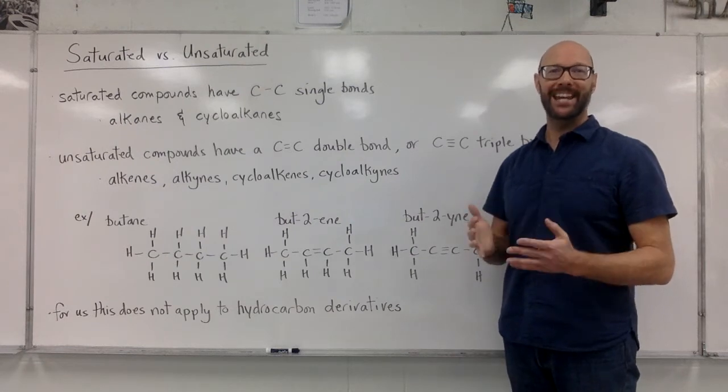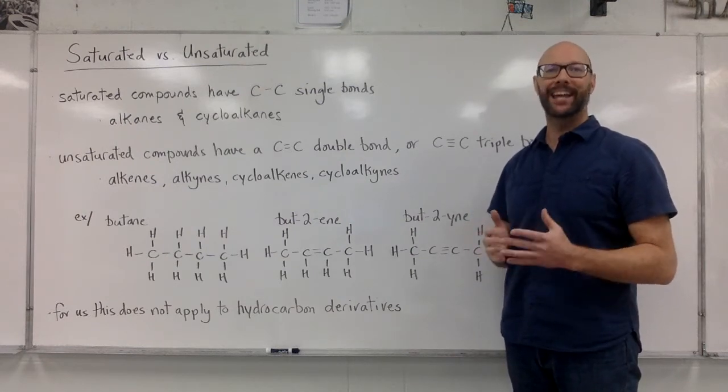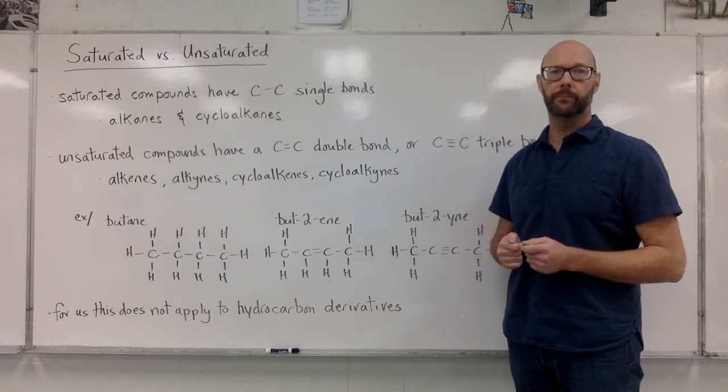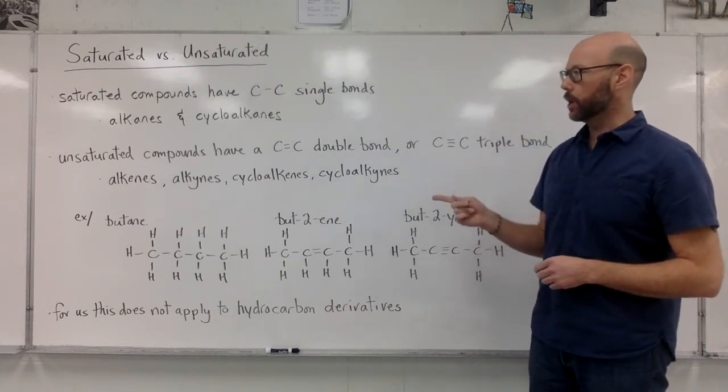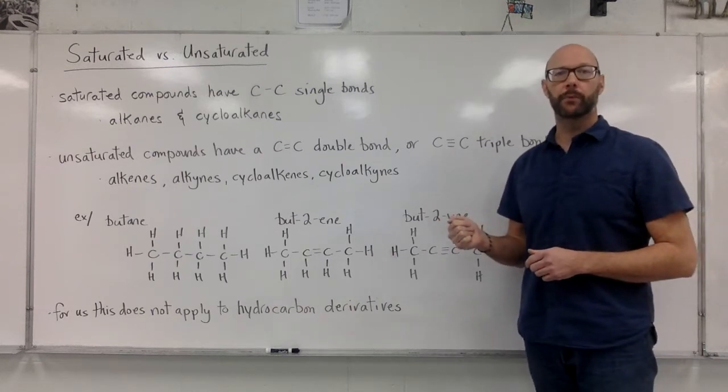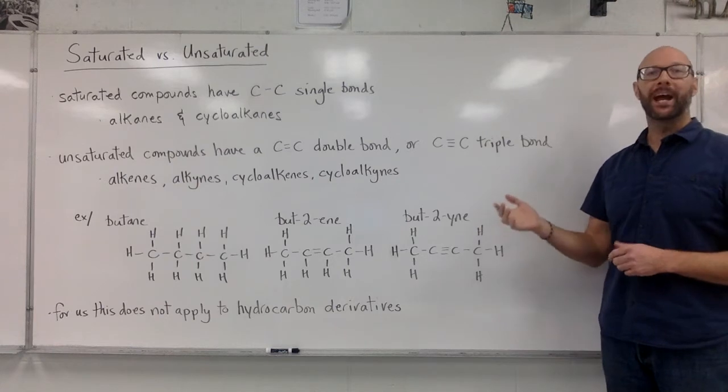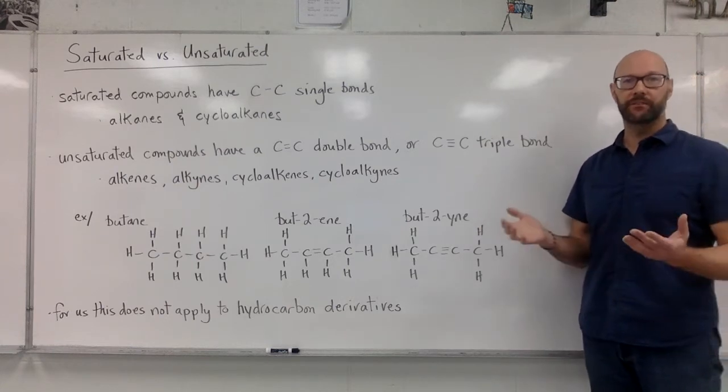This means alkanes and cycloalkanes are both examples of saturated compounds. In contrast, unsaturated compounds have a double bond somewhere or a triple bond somewhere. And there's four classes of compounds that fit this.